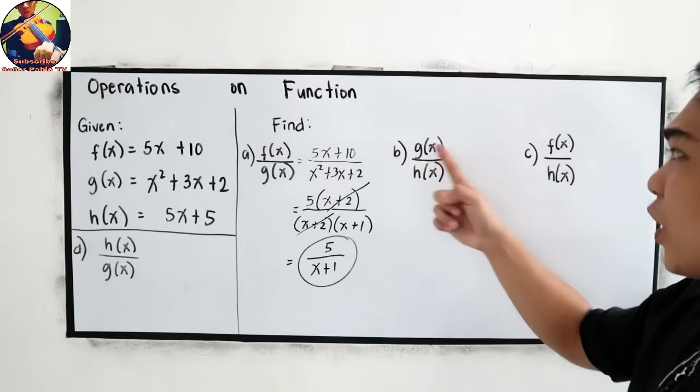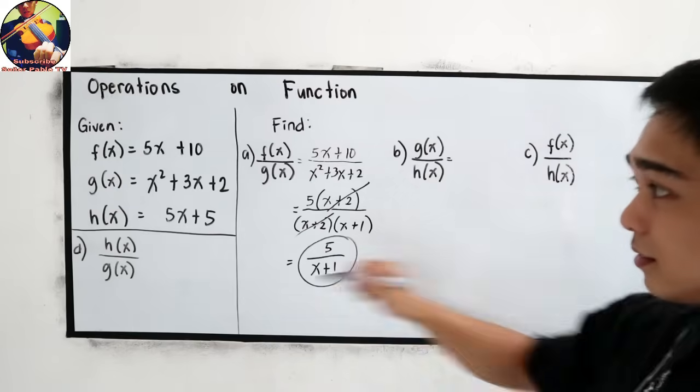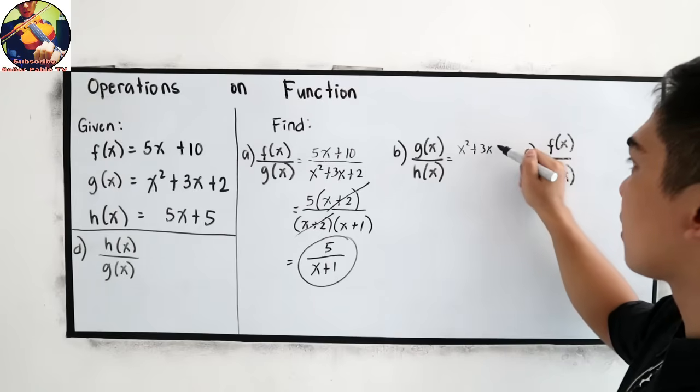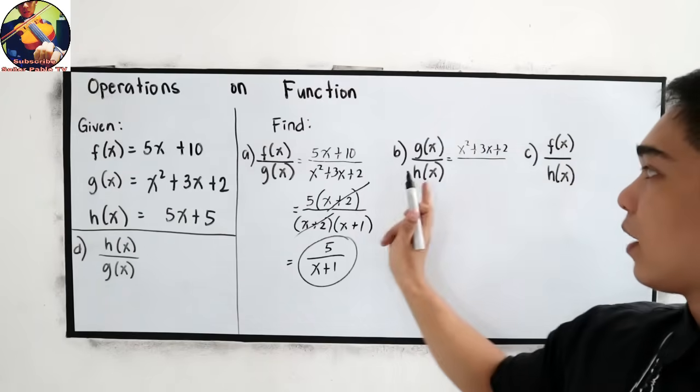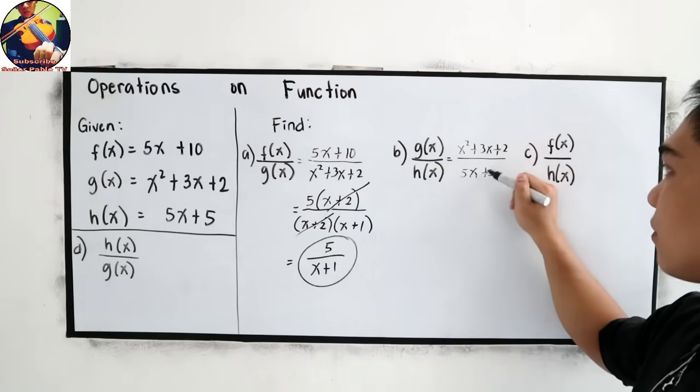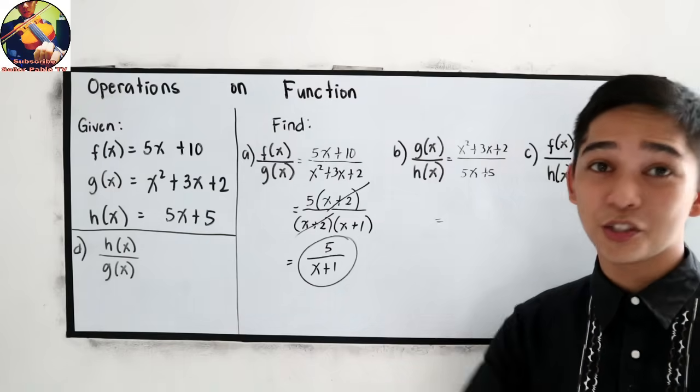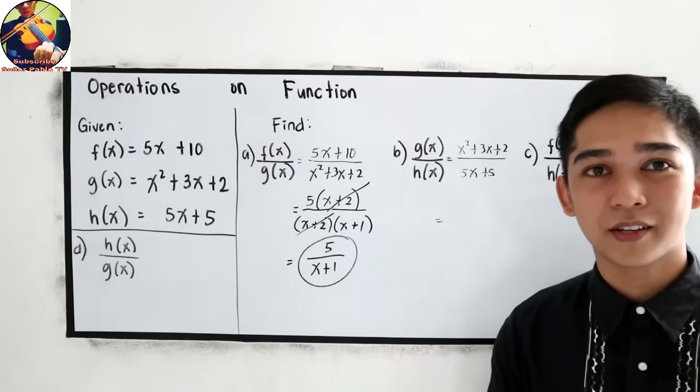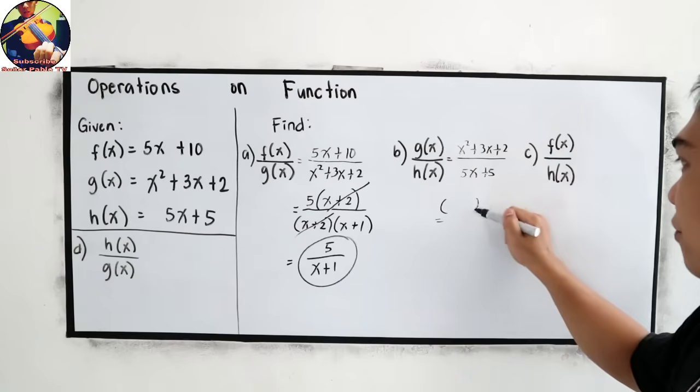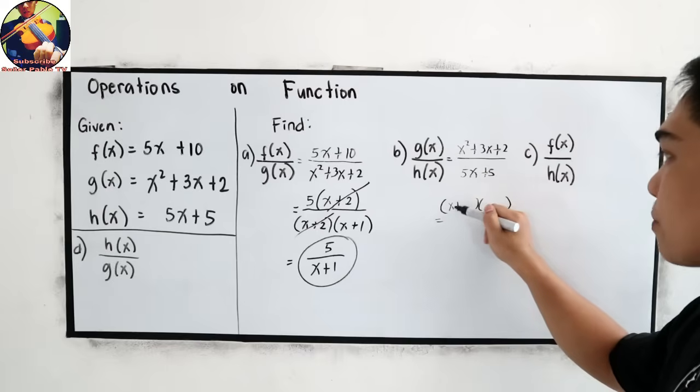Next, g of x over h of x. Substitute the given: x squared plus 3x plus 2 over h of x is 5x plus 5. Again, let us factor out the numerator and the denominator. For the numerator, we have the factored form from letter A, so just copy x plus 2, x plus 1.